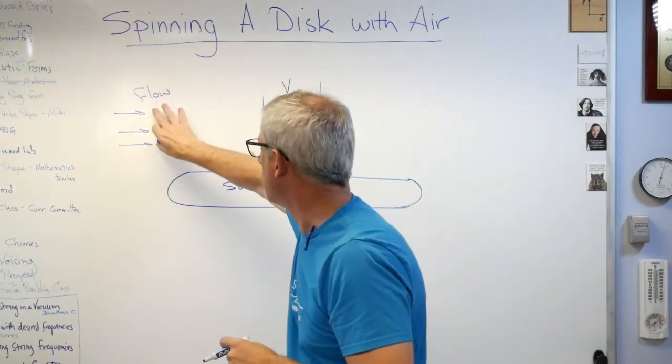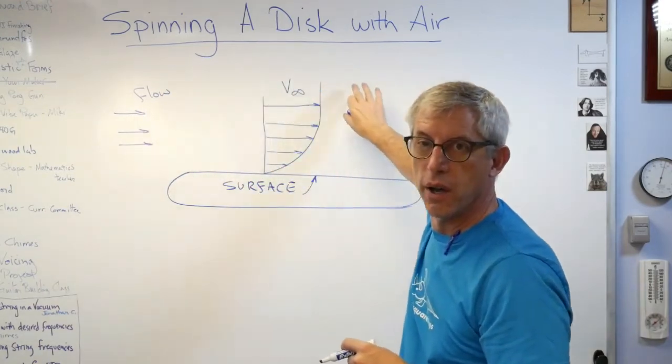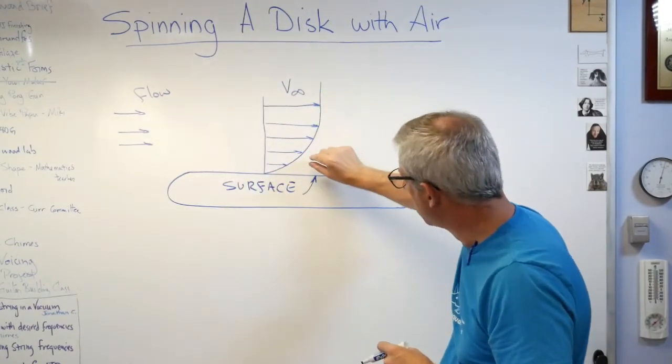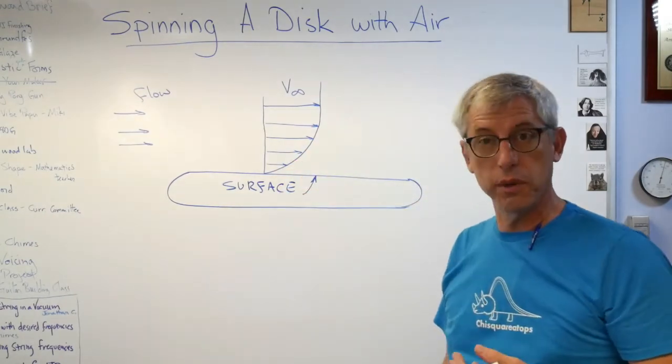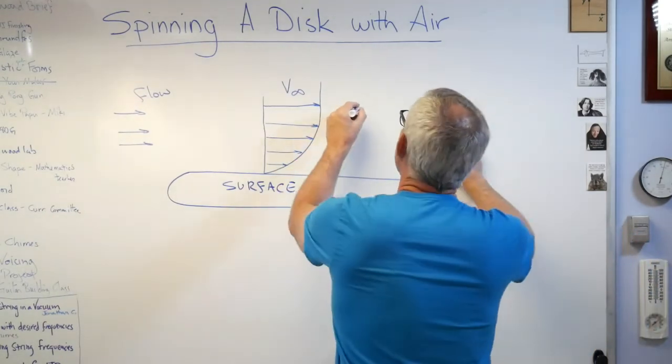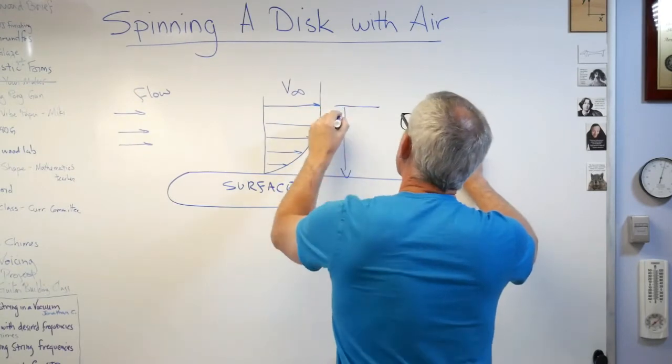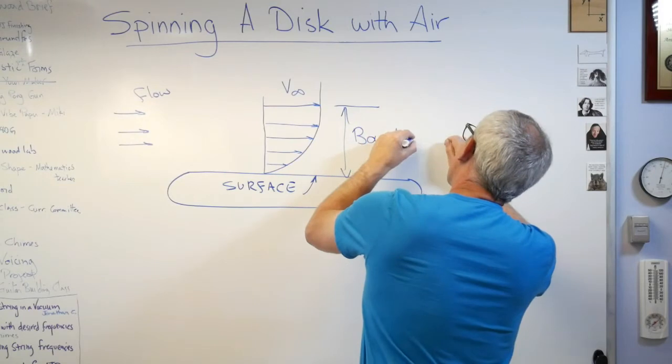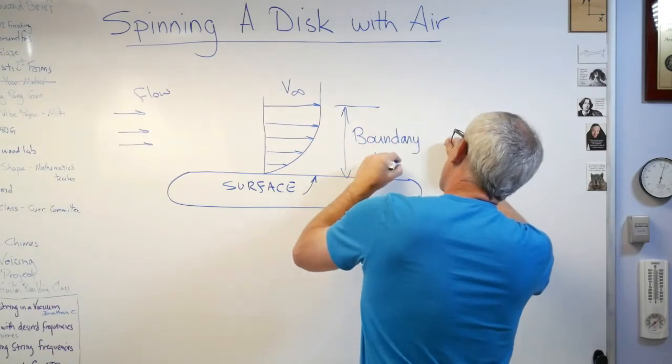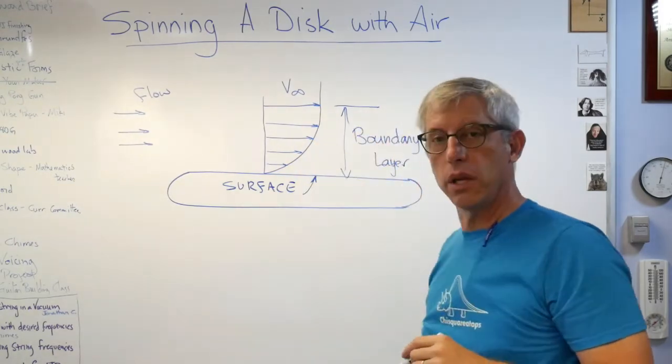The air really is going at V infinity, the speed of the air away from the wing. But when you get really, really close, the air slows down with respect to the surface. And roughly this here is called the boundary layer.